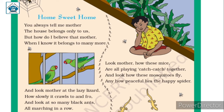And look mother at the lazy lizard, how slowly it crawls to and fro, and look at so many black ants all marching in a row. Mother, yeh lazy lizard ko chipkali kaisi dire dire crawl karti hai aage peeche jaati rehti hai, aur in black ants ko dekho, yeh sabhi kaisi ek hero mein marching kar rahi hain.